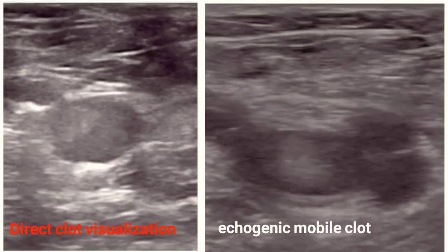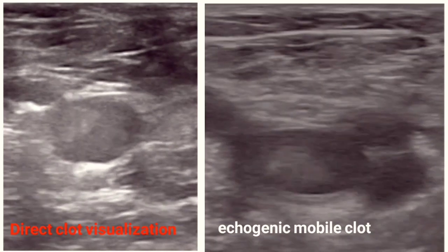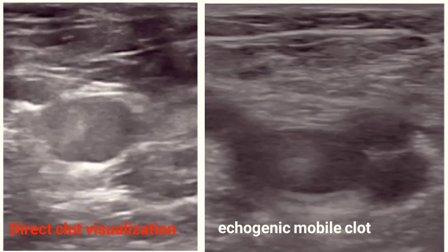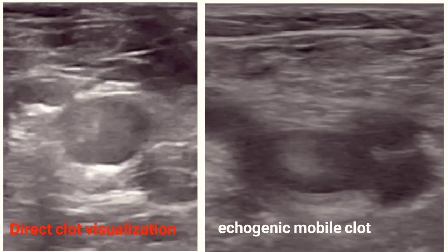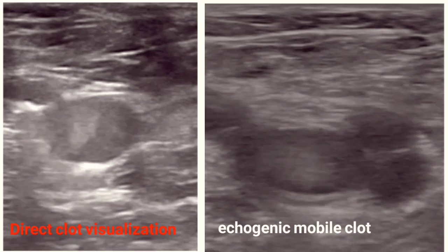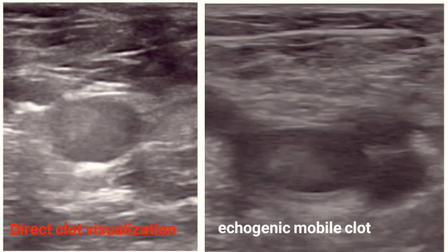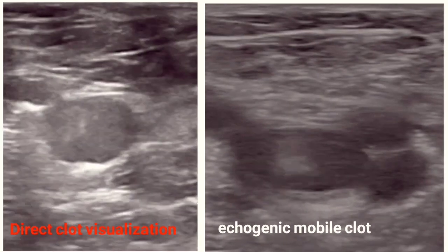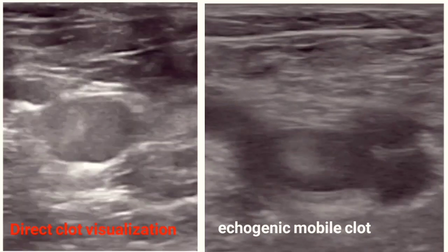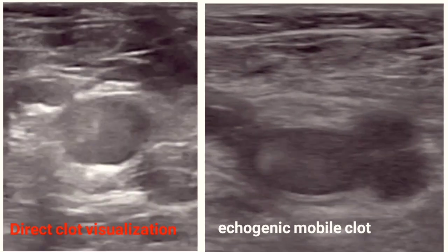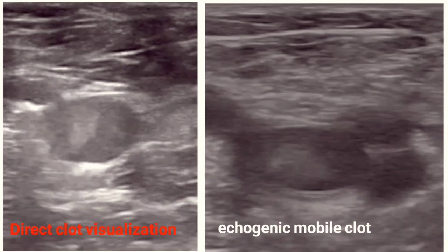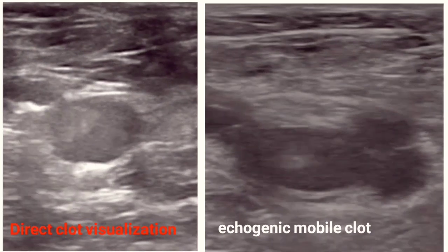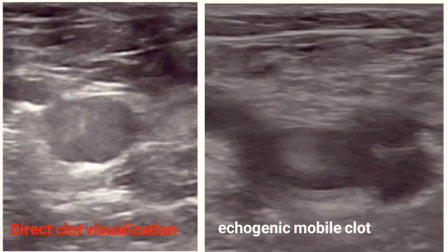Depending on the age of a clot, we may see an echogenic mass inside the vessel. If our probe is directly over the mass, we may not be able to see acute thrombi because they are anechoic or hypoechoic and tend to be near the edges of the lumen. As the thrombus ages, it becomes more echogenic and retracts from the vein walls, making it much easier to detect with ultrasound. When scanning for clots, don't rely solely on direct visualization — always perform the compression technique to avoid missing any acute DVTs.